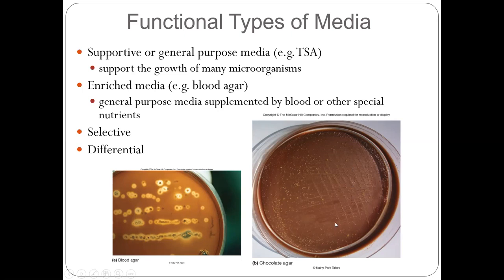This one looks brownish, looks like chocolate, so we call it chocolate agar. But be careful — there is no chocolate in it. This is 5% sheep blood agar heated at 70 degrees Celsius, which turns the color brownish. So we call it chocolate agar — it should really be called chocolate-like agar. Chocolate agar is used to cultivate fastidious bacteria such as Neisseria gonorrhoeae, which causes gonorrhea, and Haemophilus influenzae, which causes childhood meningitis.